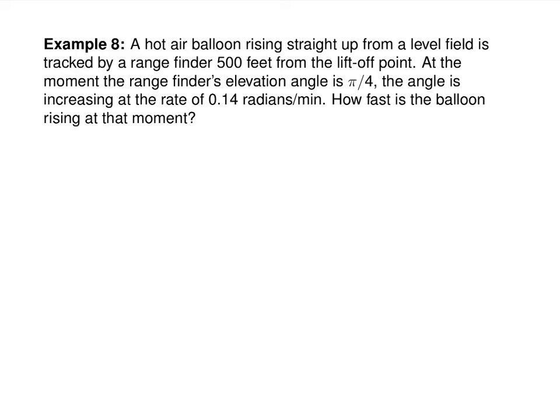This one has a little bit of trigonometry in it. A hot air balloon rises straight up from a level field and is tracked by a rangefinder 500 feet from the lift-off point. You have a person and the balloon going up; the rangefinder is 500 feet away. I'm going to call the height of the balloon Y and the hypotenuse side Z — though we won't need all the sides.